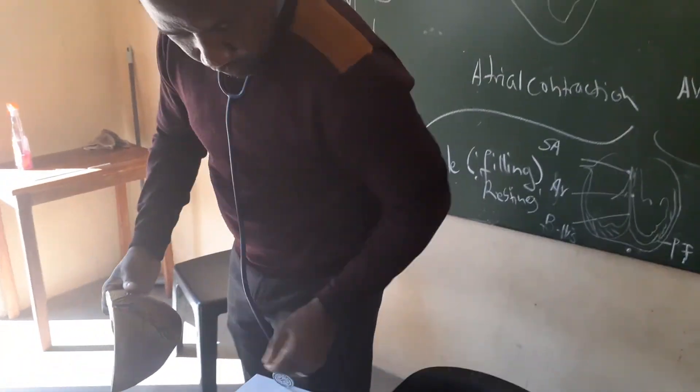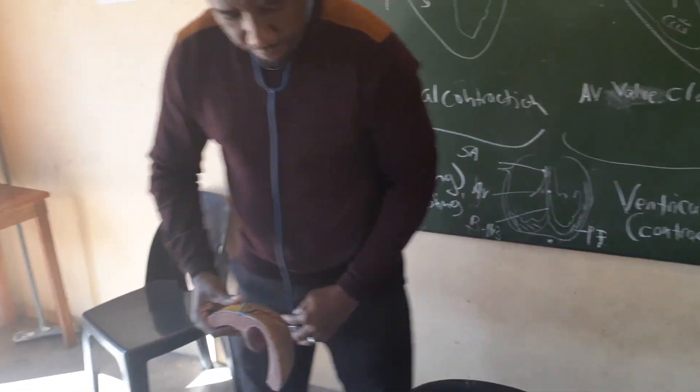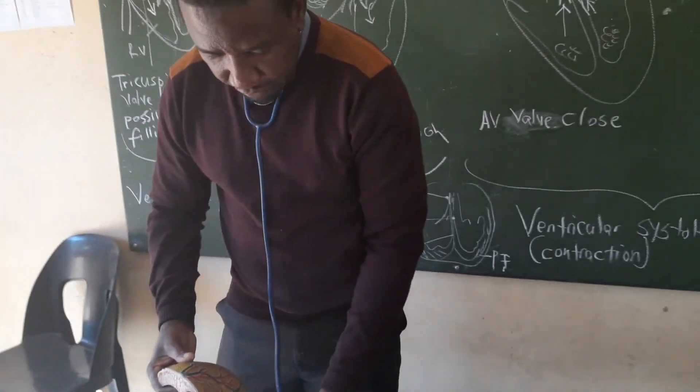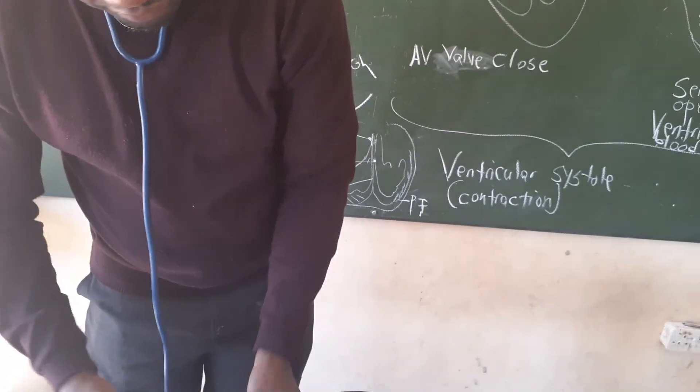Now let's go to the blood vessels. That was about the heart. When we go to the blood vessels, these are the different ones that we have in our body.